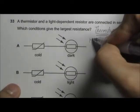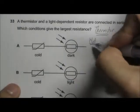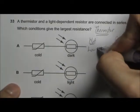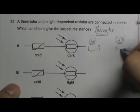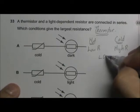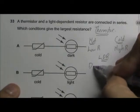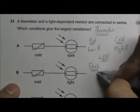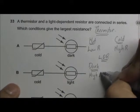When it's hot, the resistance will be low, and when it's cold, the resistance will be high. For a light dependent resistor, when it is dark, the resistance will be high.